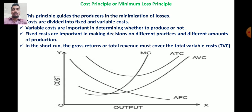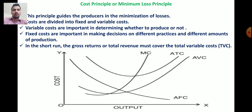Variable costs change over time. Variable costs are important in determining whether to produce or not in a particular period of time, because of the cost of variable inputs. On the other hand, fixed costs are important in making decisions on different practices and different amounts of production.